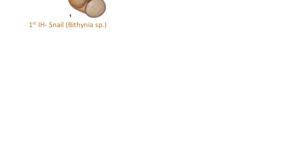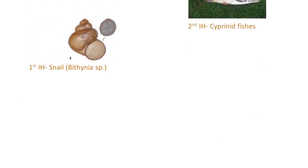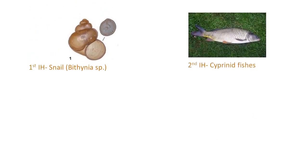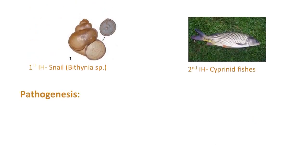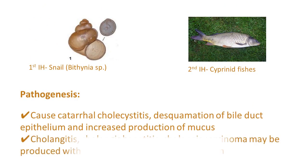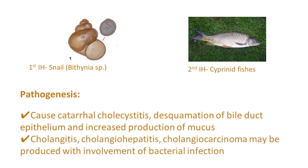The intermediate hosts are the same: 1st Intermediate Host is Snail and 2nd Intermediate Host is Cyprinid fishes. Pathogenesis includes Catarrhal Cholecystitis, Cholangitis, Cholangiohepatitis, and Cholangiocarcinoma.